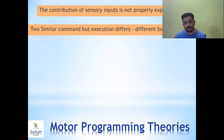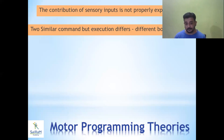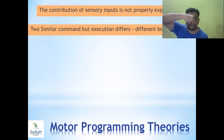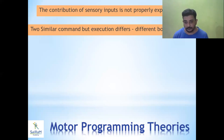Another important limitation is that the theory did not explain how central pattern generators produce movements from different body postures. When gravity influences the body differently, muscle activation changes. For example, when eating a biscuit with your hand at your side, the pattern differs from when your hand is on a table and you must reach out — your shoulder muscles must also work in addition to elbow and forearm muscles. The theory could not explain how patterns differ across different body postures and task contexts.